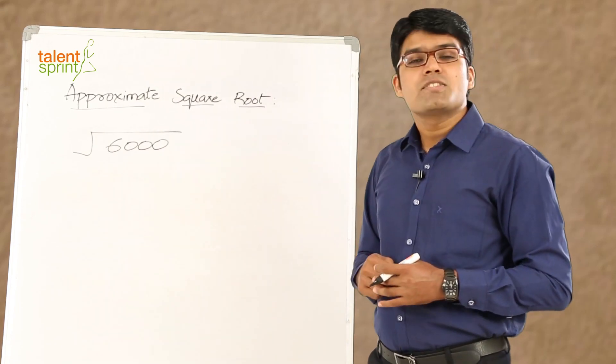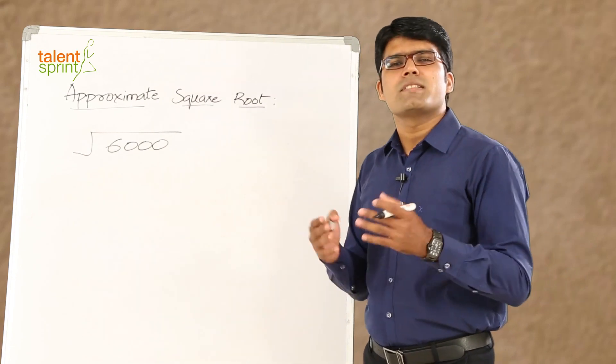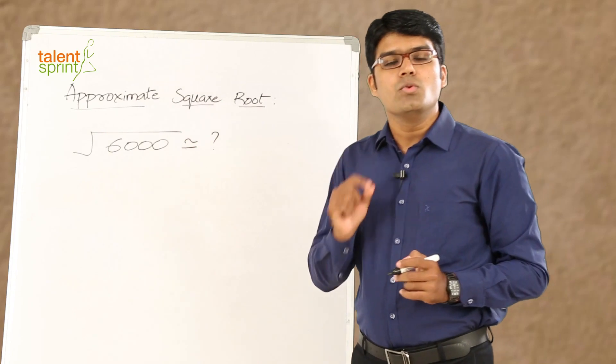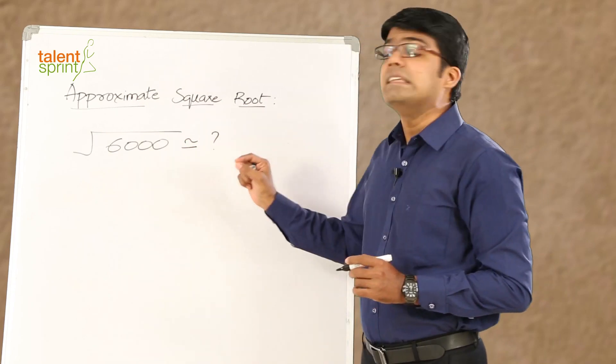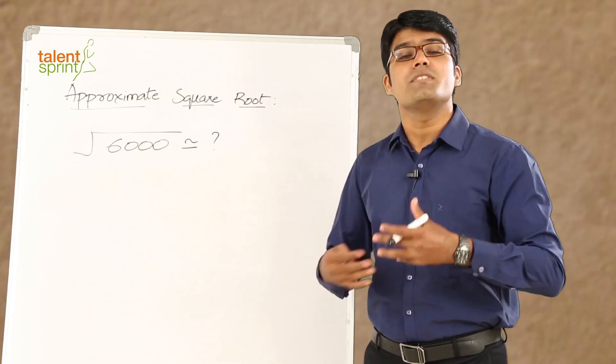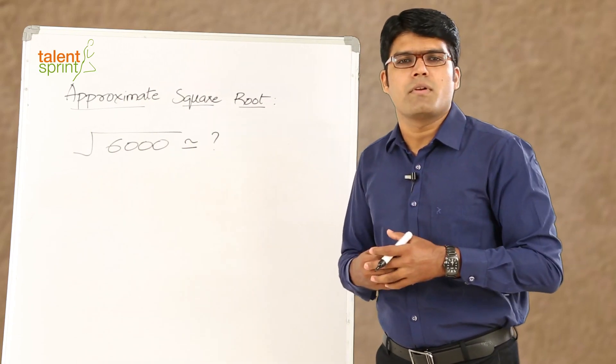So, let us see how do we get the answer for square root of 6,000? What is the approximate square root of 6,000? Now, all we need to do here is first find out the nearest perfect square that we know. It may not be the nearest, but something closer to 6,000, which is easy for us to remember. For example,